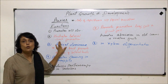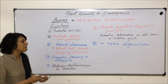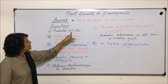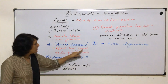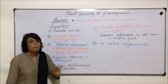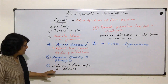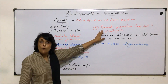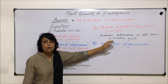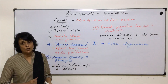Auxins initiate lateral root formation, so whenever branching of the root has to take place, auxins help in that. Apical dominance is a very important term — as long as the apical bud is active and producing auxin, it prevents the development of lateral buds, so branching would not take place. It promotes flowering in pineapple, induces parthenocarpy in tomatoes, prevents premature leaf and fruit fall, and assists in xylem differentiation.